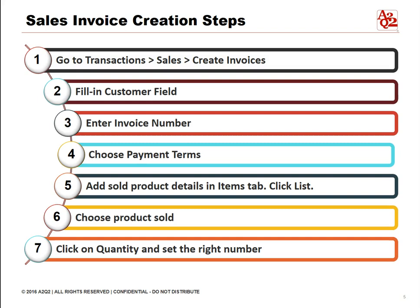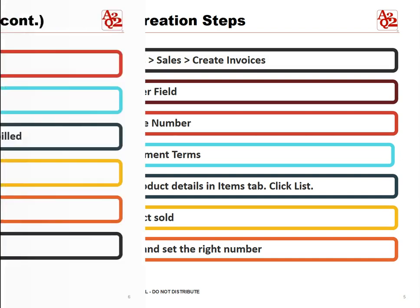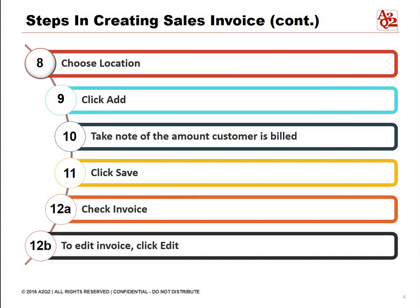Click List. Six, choose products sold. Seven, click on quantity and set the right number. Eight, choose location. Nine, click Add. Ten, take note of the amount the customer is billed. Eleven, click Save.